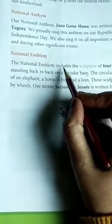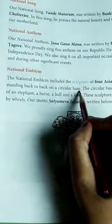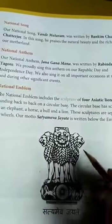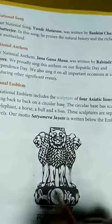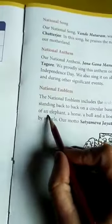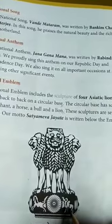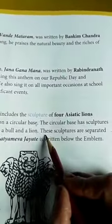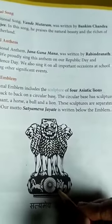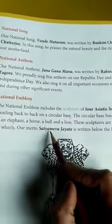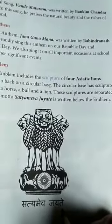National Emblem. The National Emblem includes the sculpture of four Asiatic lions standing back-to-back on a circular base. जो हमारा राष्ट्रीय चिह्न है वो एक मूर्ती को include करता है जिसमें four Asiatic lions हैं जो एक दूसरे के पीछे खड़े हैं एक circular base पर. The circular base has sculptures of an elephant, a horse, a bull and a lion, separated by wheels. Our motto, Satyameva Jayate, is written below the emblem — जो हमारा motto है सत्यमेव जयते वो इस emblem के नीचे लिखा गया है.